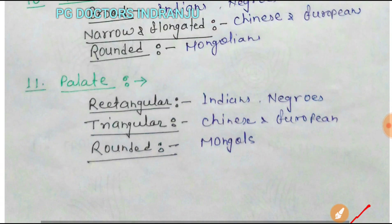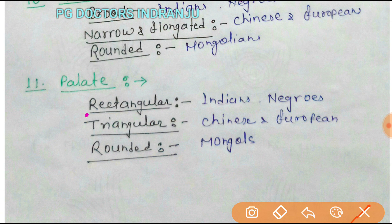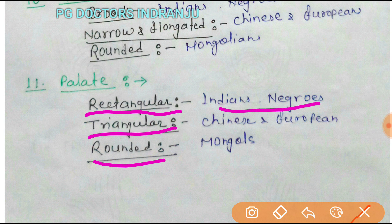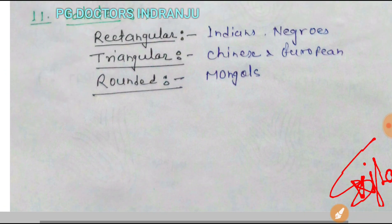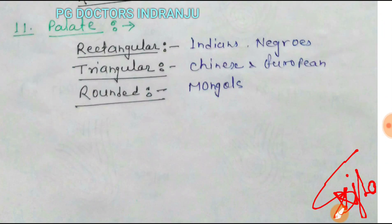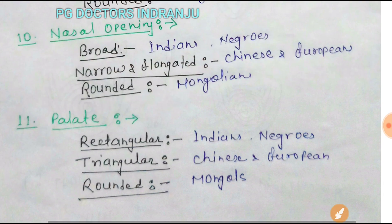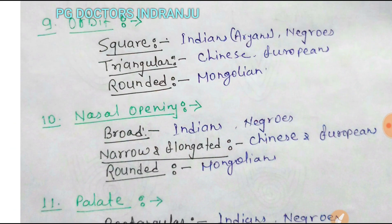Next is the palate shape. A rectangular palate is found in Indians and Negroes. A triangular palate is found in Chinese and Europeans. A rounded palate is found in Mongolians. This covers the important topic of determination of races. Thanks for watching my video — any suggestion or advice, please write in the comments box.